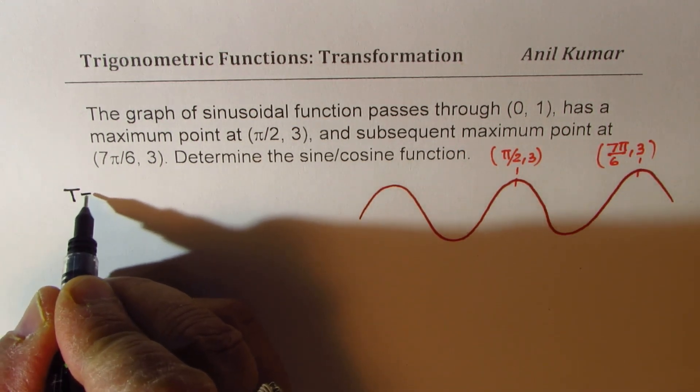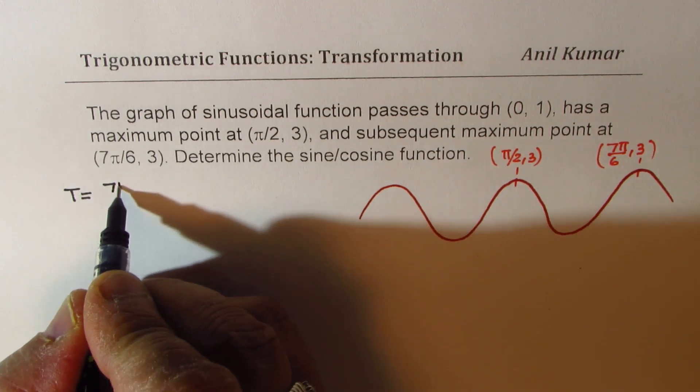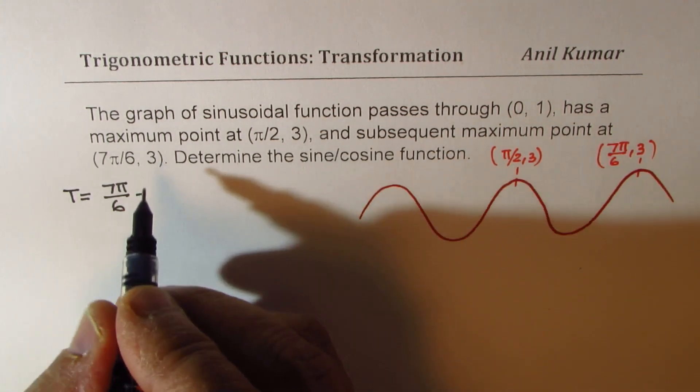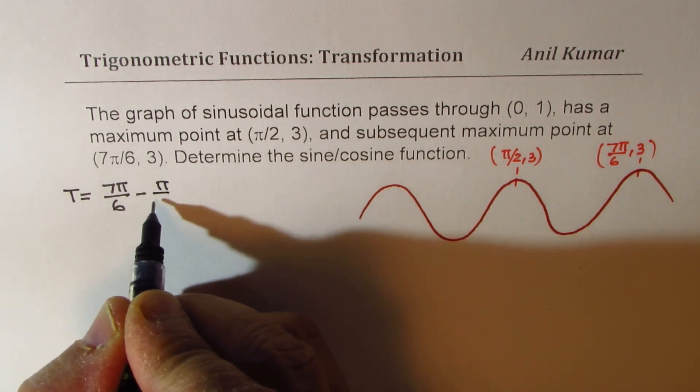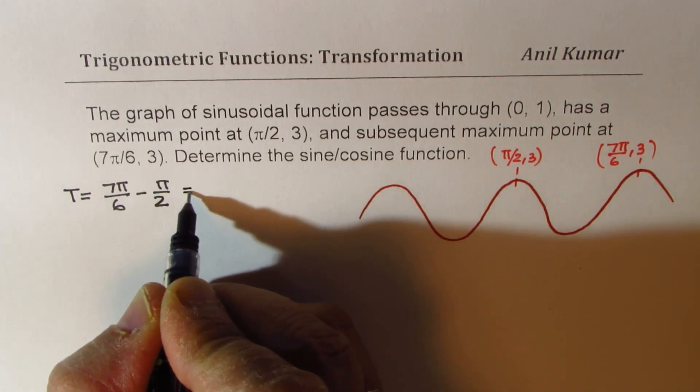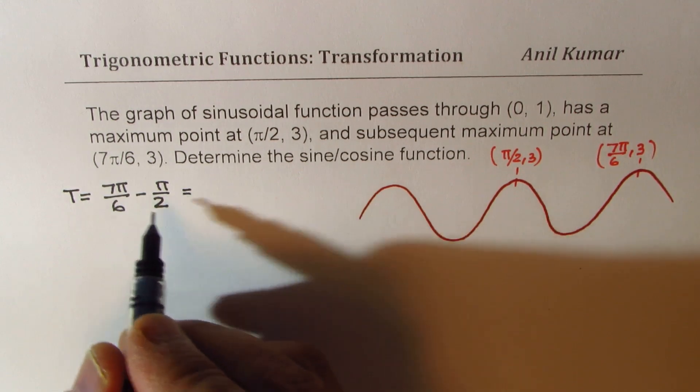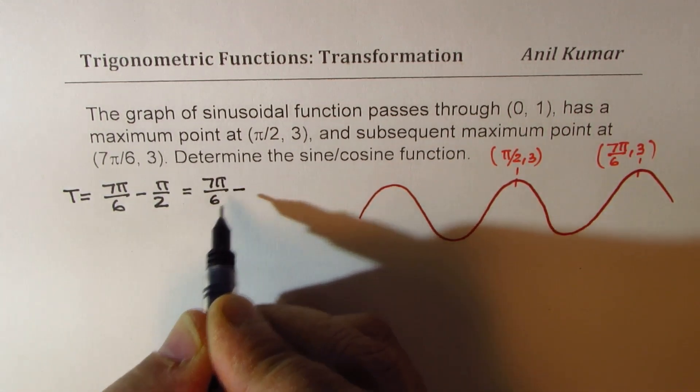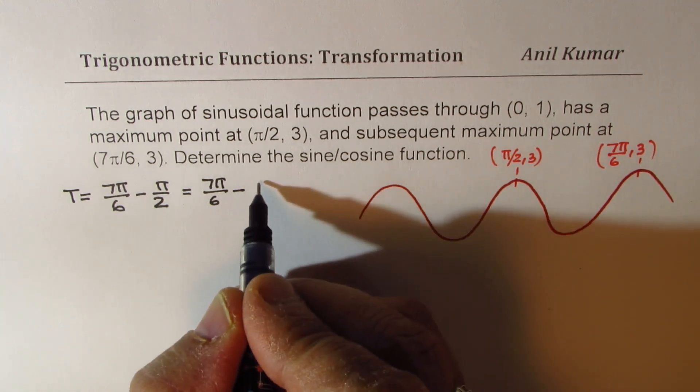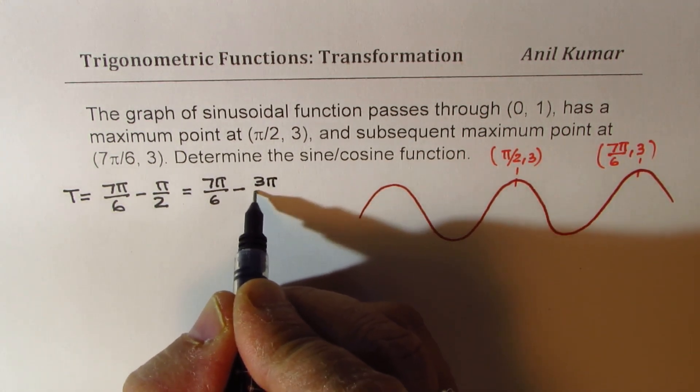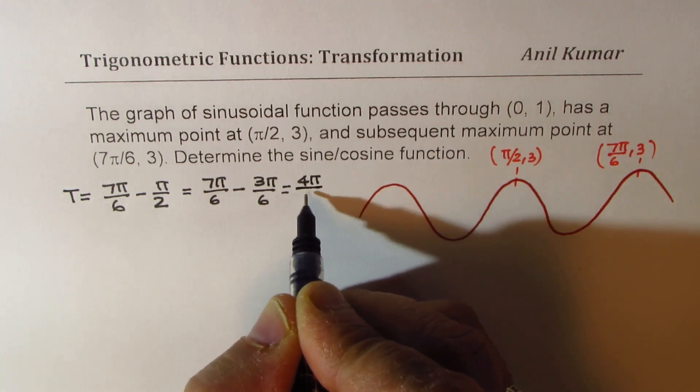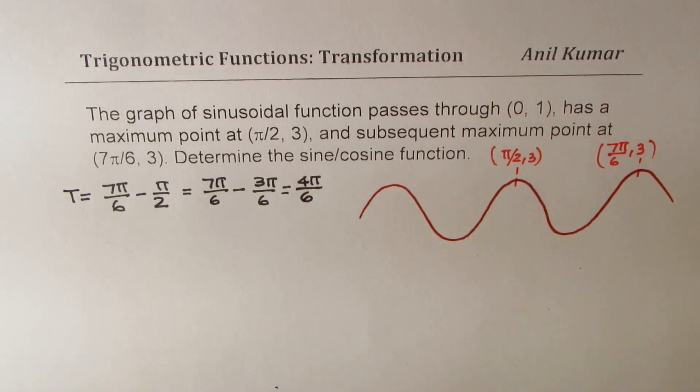So T, the time period for us will be 7π/6 minus π/2. Now we have to have same denominators. So it will be 7π/6 minus multiplying by 3 gives us 3π/6. So we get a time period of 4π/6.